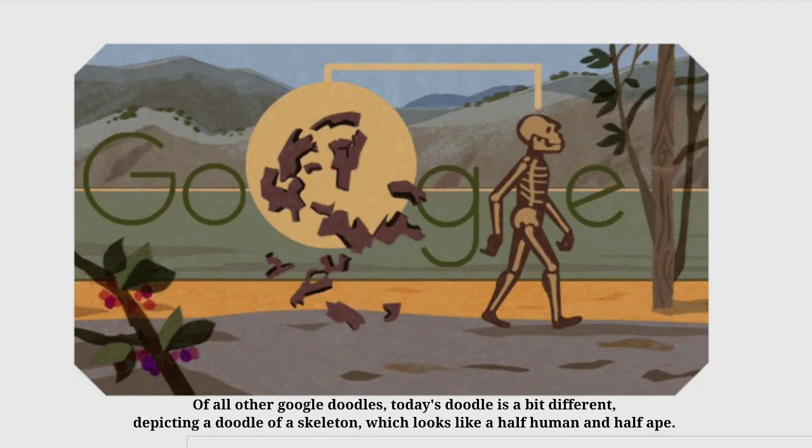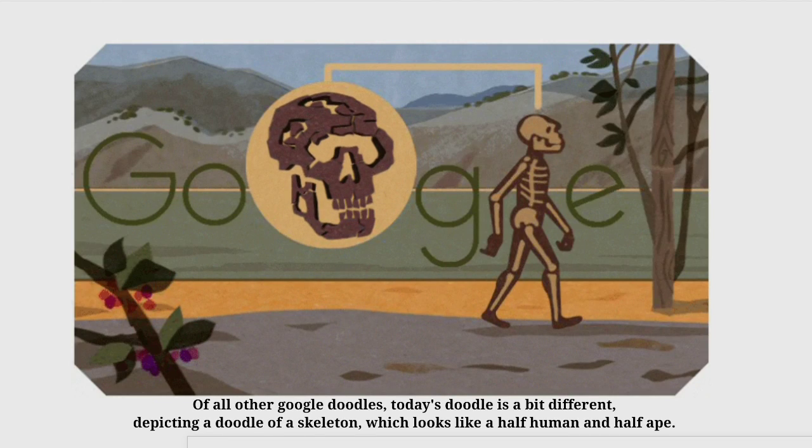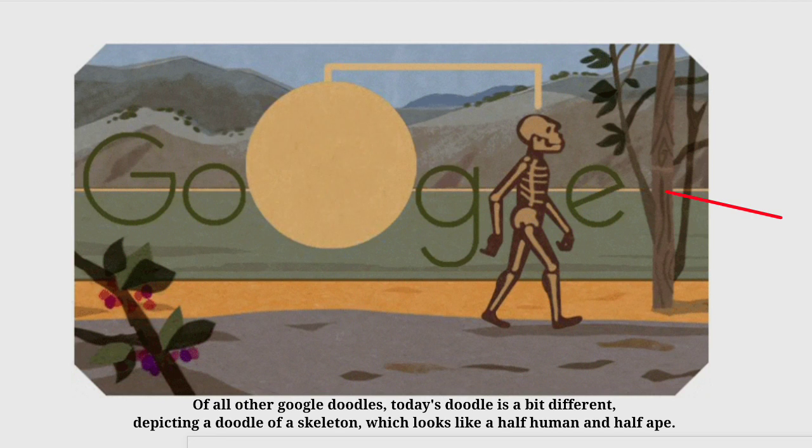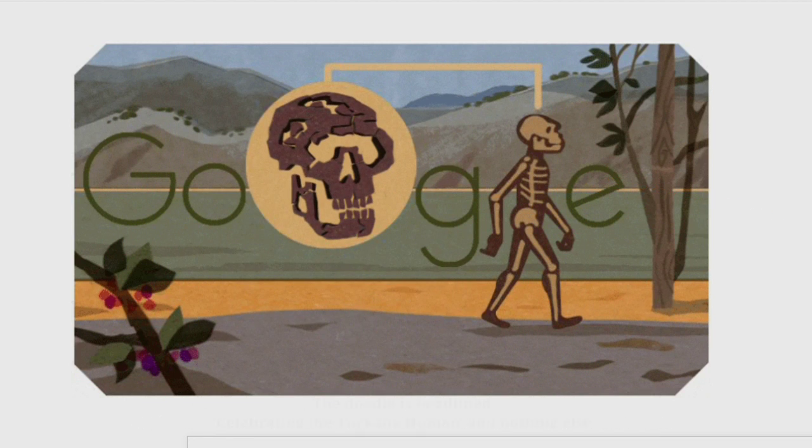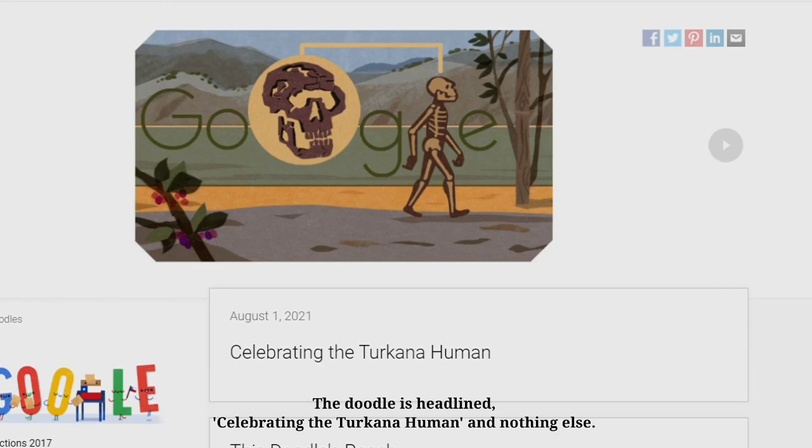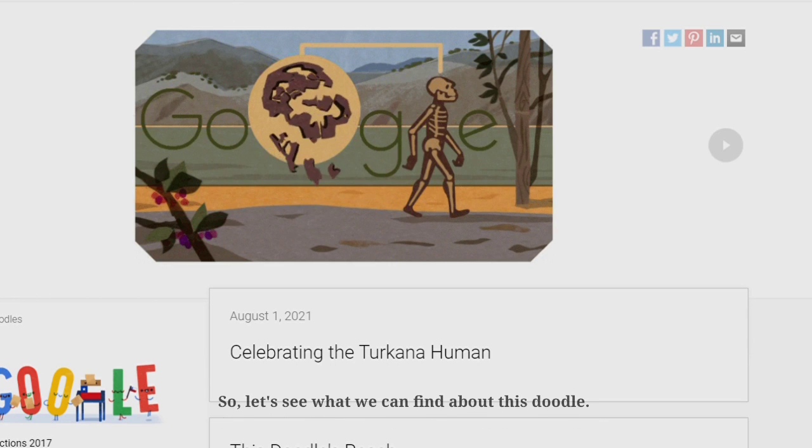Of all other Google Doodles, today's doodle is a bit different, depicting a doodle of a skeleton which looks like a half-human and half-ape. The doodle is headlined celebrating the Turkana human and nothing else. So let's see what we can find about this doodle.